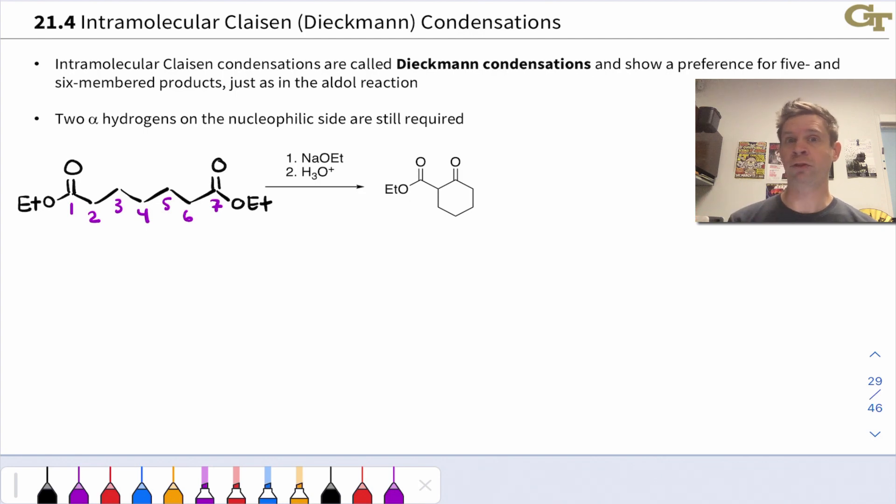Because the mechanism works just like the intermolecular Claisen, we still require two alpha hydrogens on the nucleophilic side, because deprotonation of the resulting beta-keto ester is what drives this reaction thermodynamically. So we need to be able to form a stabilized enolate after the acylation mechanism is done.